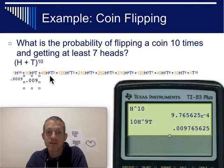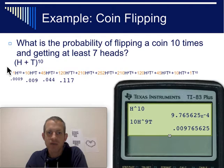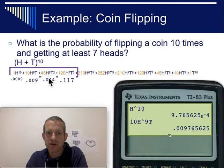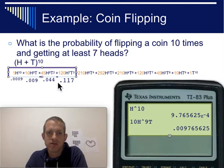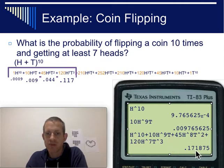If you want the likelihood of getting eight heads, type that term into your calculator — that's about 0.044, about four and a half percent. Seven heads is about 11 percent of the time. If you want the probability of getting at least seven heads, that's the combination of all four of those terms. You add them all up and that's the probability. You could do them individually or in one step on your calculator by typing the full expression. You end up with about 17 percent.